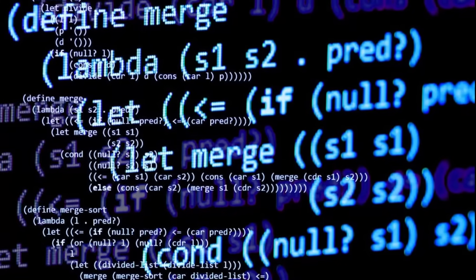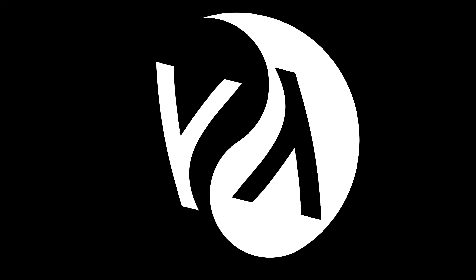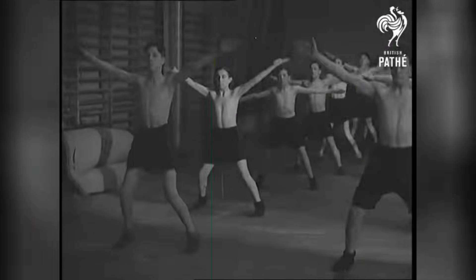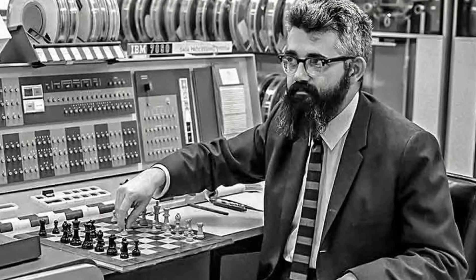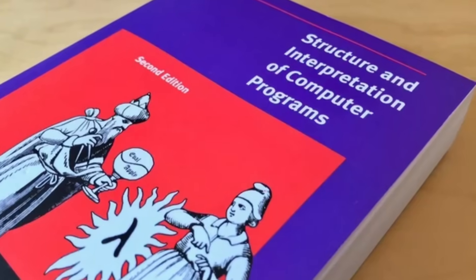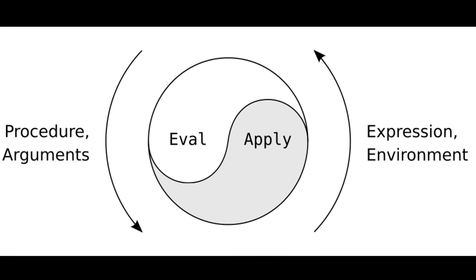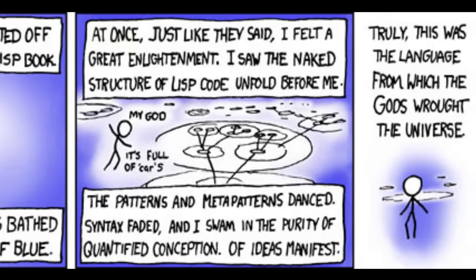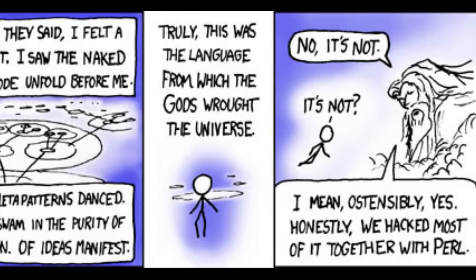I heard these words for years without truly understanding what they meant, until I dove into the history of Lisp — a story that begins with a young genius raised during the Great Depression, expelled from university, that intersects with the birth of artificial intelligence, and is marked by a book that, despite looking like a spellbook, has illuminated generations of programmers. Today, you're going to discover what makes Lisp unique, and a new way of thinking about software that can forever change how you write code.